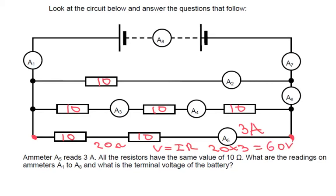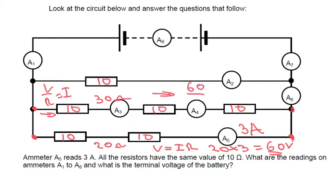Now we know between here and here we've also got 60 volts. The total resistance along our second branch here is going to equal 10 plus 10 plus 10, which is going to be 30 ohms. So we know this branch is 30 ohms and we've got a voltage of 60 volts across it. So by V over R equals I, 60 divided by 30 equals 2. So we've got 2 amps here and 2 amps here.